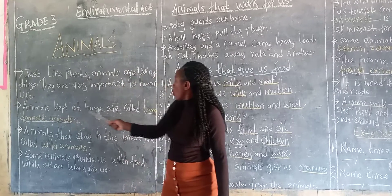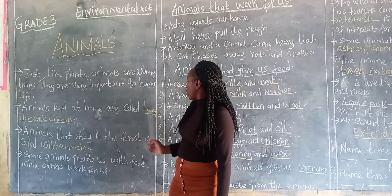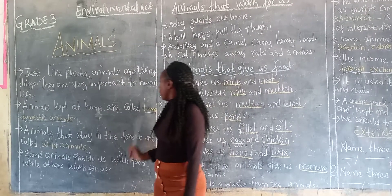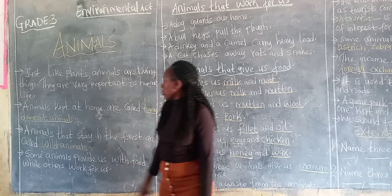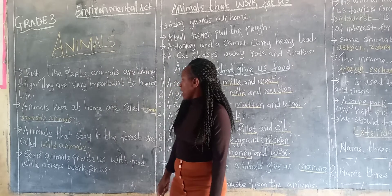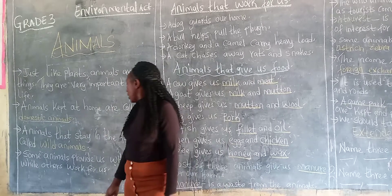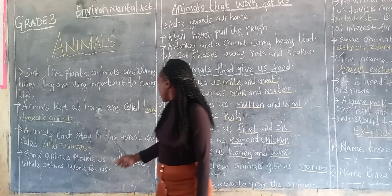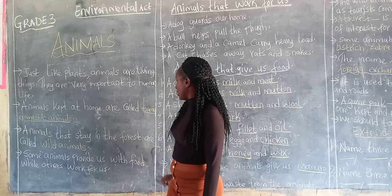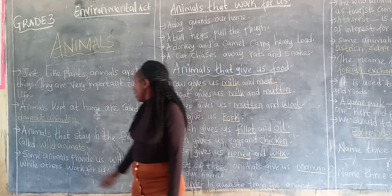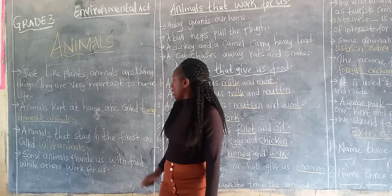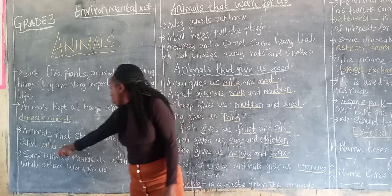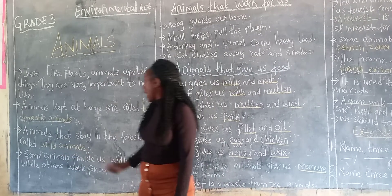So animals kept at home are called tame or domestic animals. Then we have animals that stay in the forest, and the animals that stay in the forest they are called wild animals.